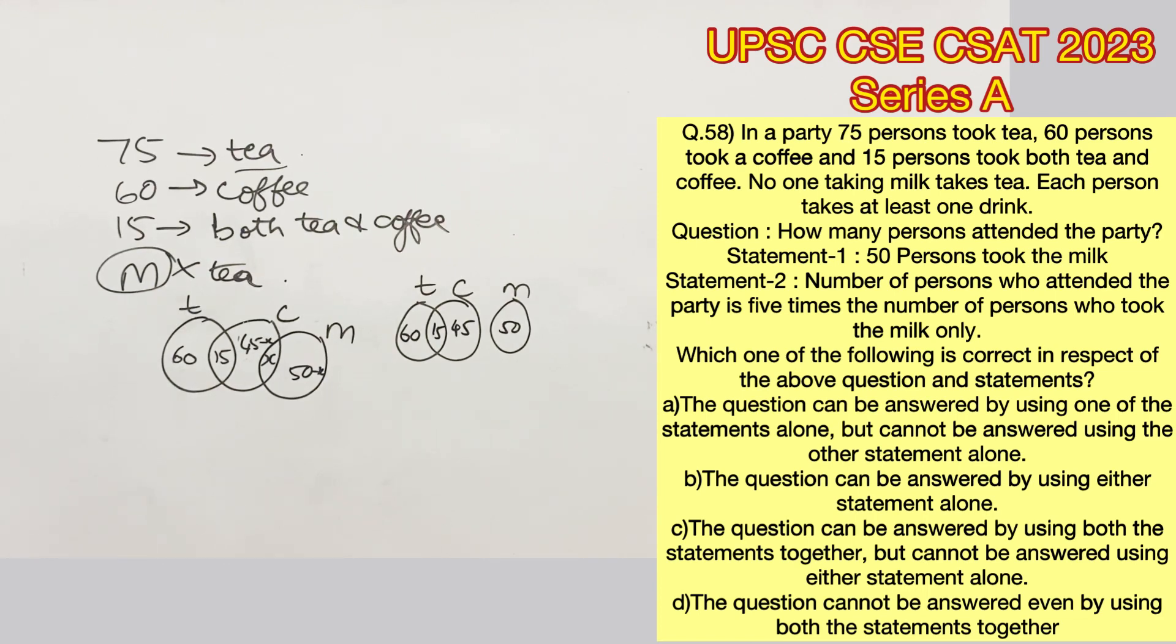With this statement alone, we cannot find how many attended the party. The second statement says number of persons who attended the party is 5 times the number of persons who took the milk only.